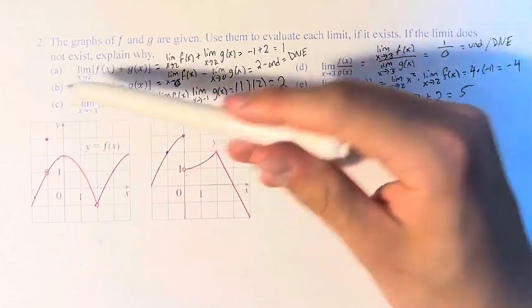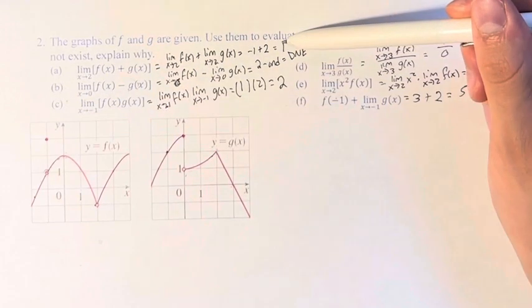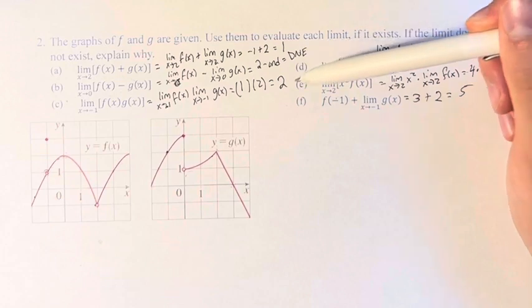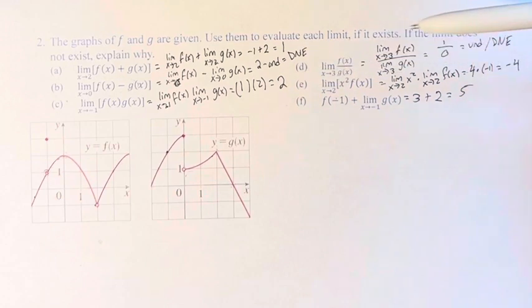So summarizing our answers: part a is 1, part b does not exist, part c is 2, part d does not exist, part e is negative 4, and part f is 5.